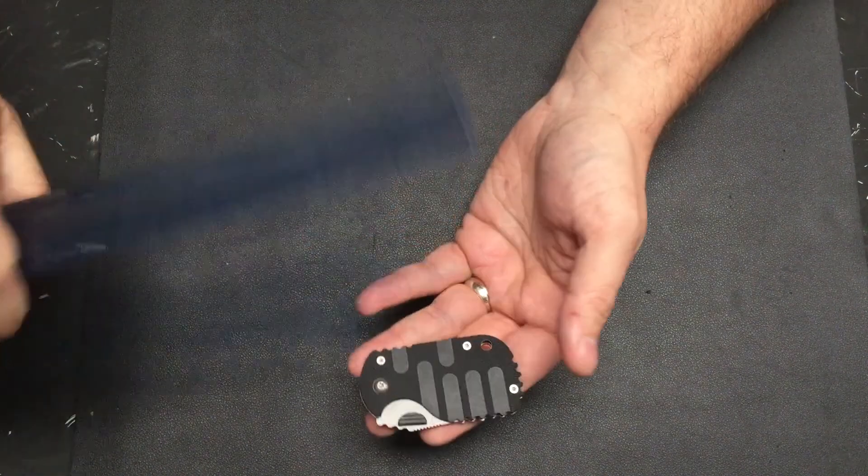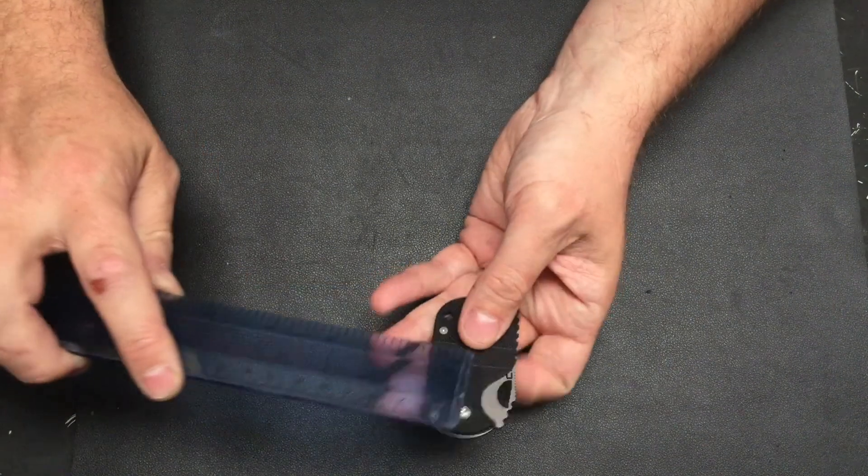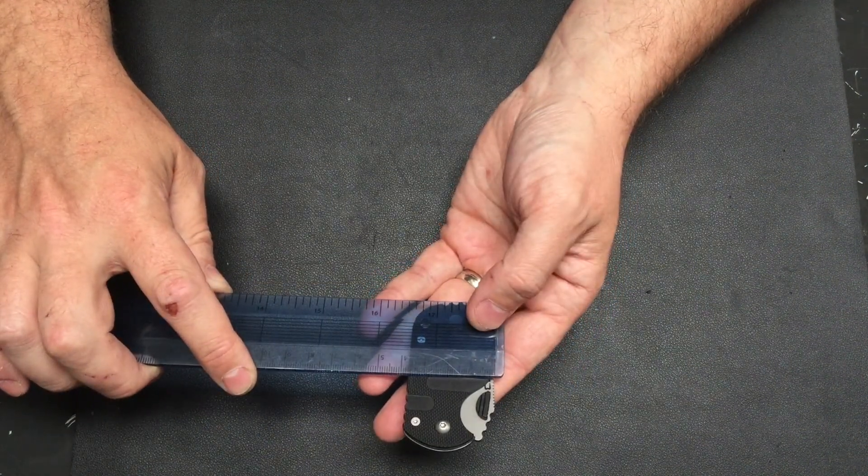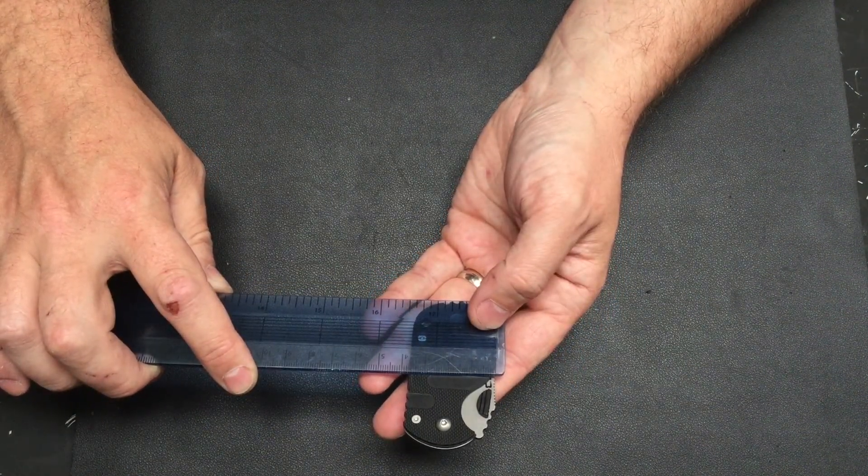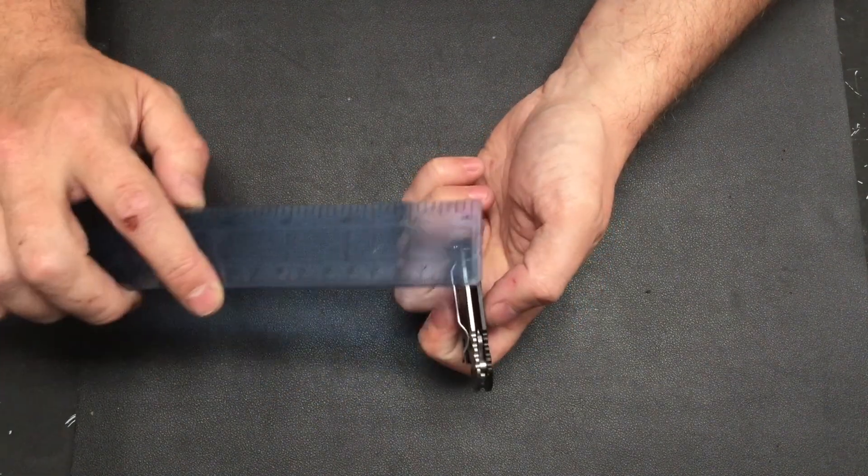Sorry, made that look more complicated than it needed to be. We're looking at just shy of seven, and if we go that dimension, we're looking at three, three point seven. Overall thickness minus the clip,